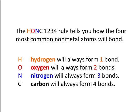What the HONC-1234 rule basically tells you is that for the four most common non-metal atoms you'll find, hydrogen will always form one bond, oxygen will form two bonds, nitrogen will form three bonds, and carbon will form four bonds. Hence the HONC-1234 rule.